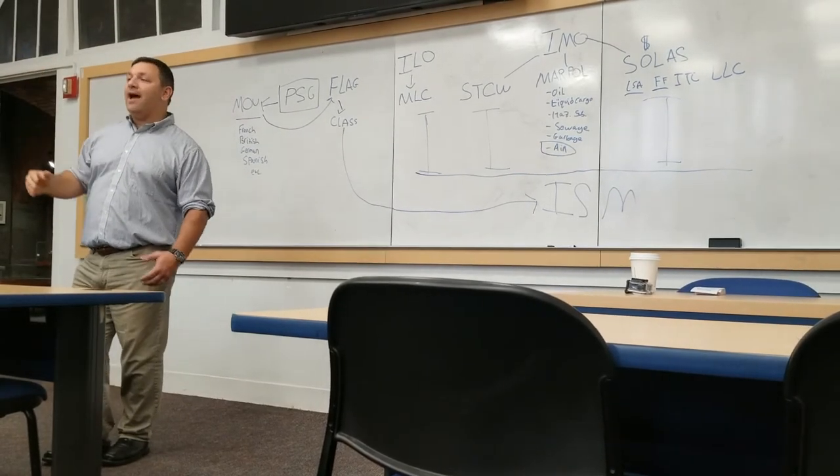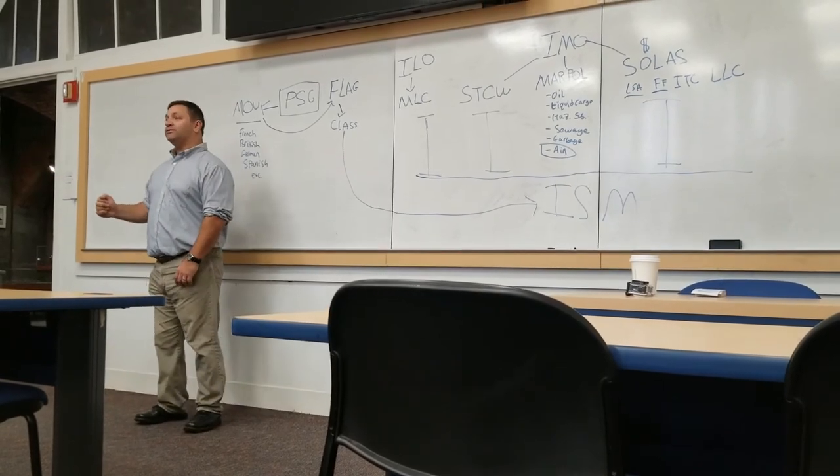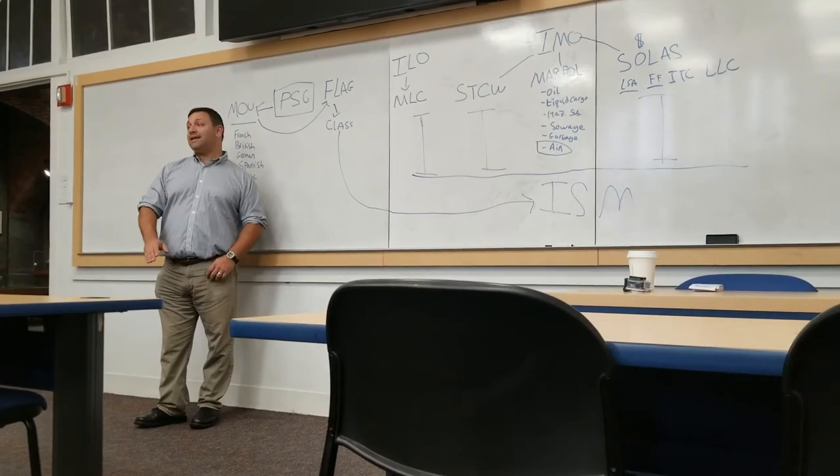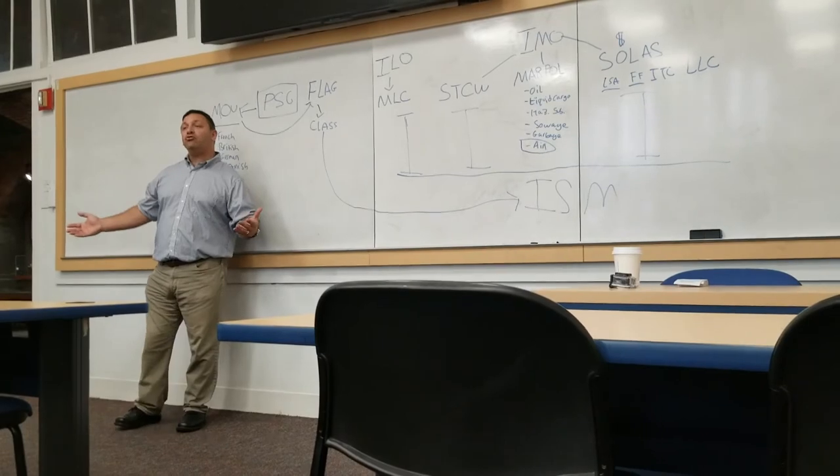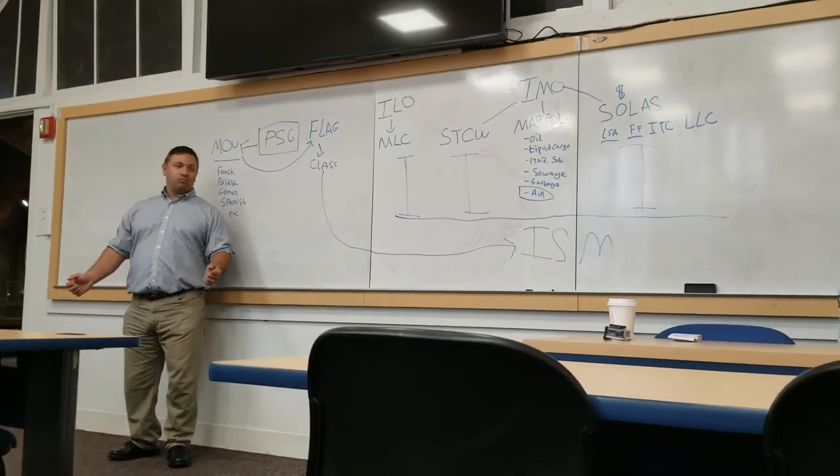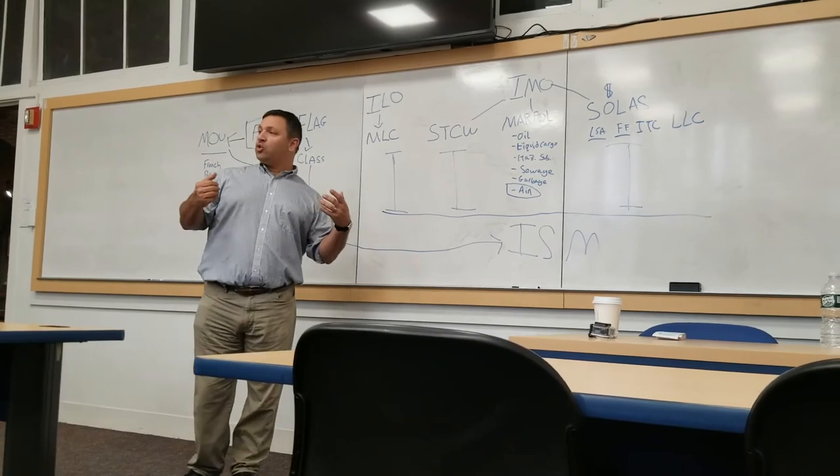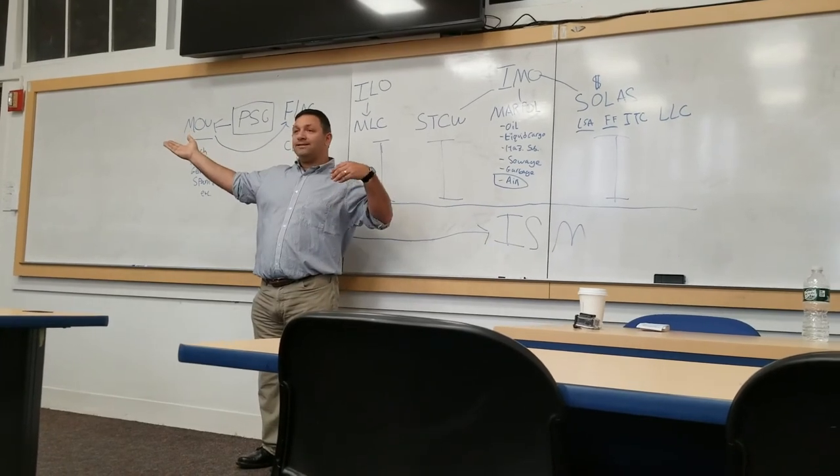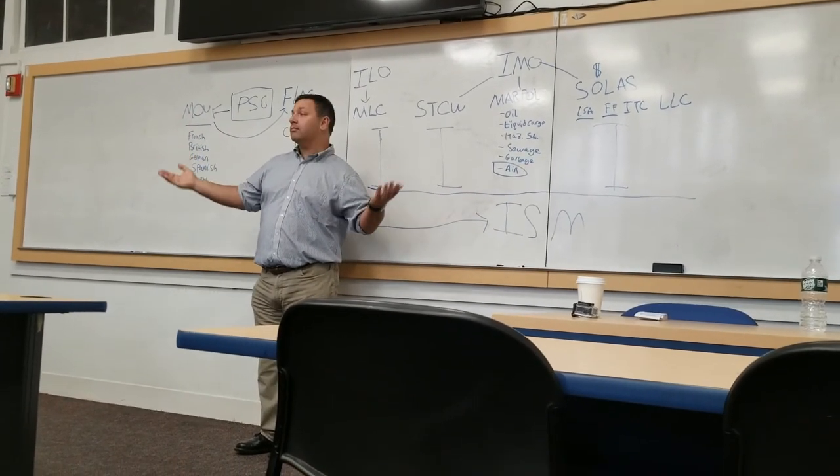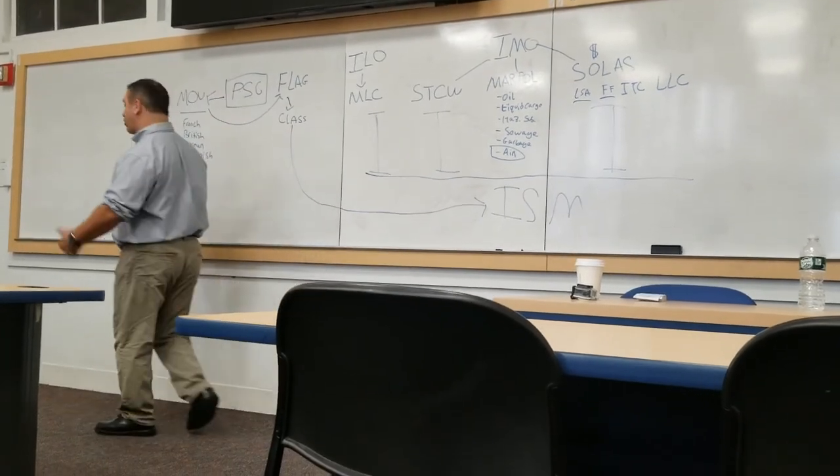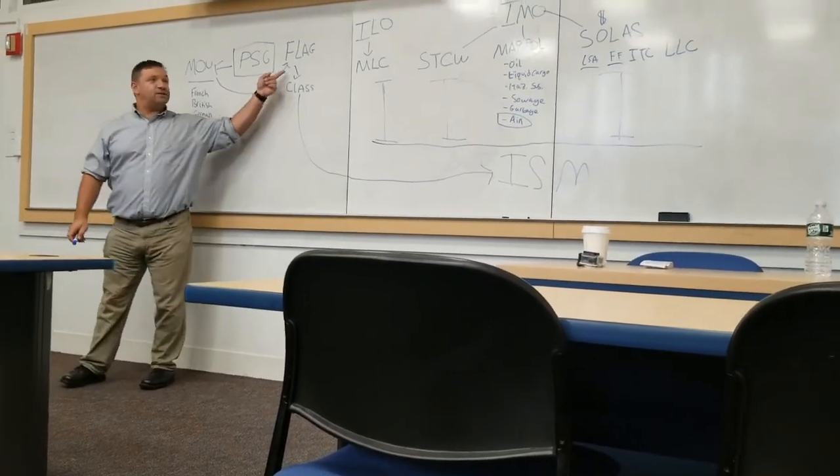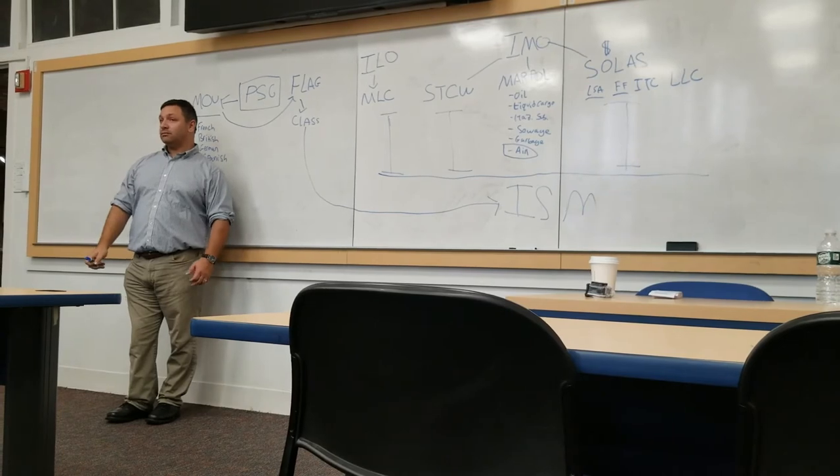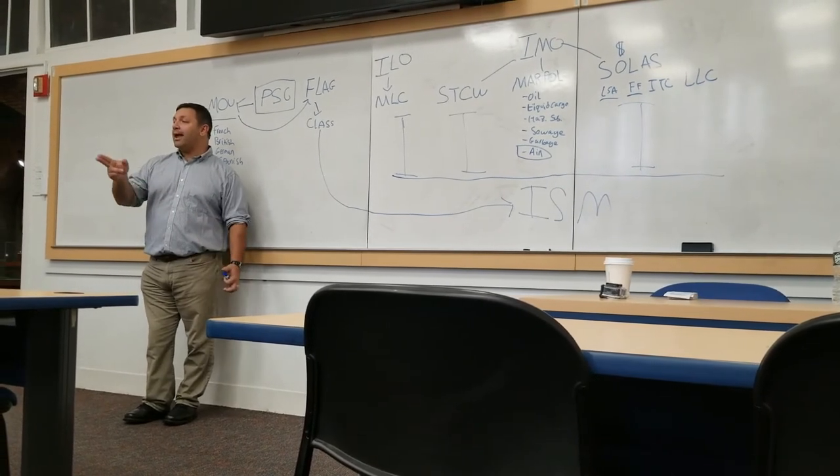Now, if I'm a charterer, do I want a charterer or a vessel that's on a flag state that's on the white list or on the black or the gray list? I want a charter with a white list. So we go back to the whole money thing again. Flag states are here for the money. If you get detained too many times, it's kind of like pruning a tree. I have to cut you loose.